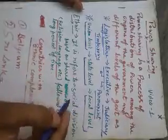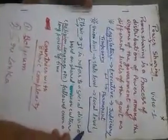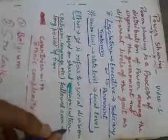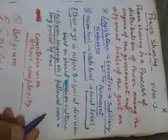Below the state government, power is further distributed to local government bodies. This covers the next level of power sharing. The chapter also touches on ethnic resolution. Thank you.